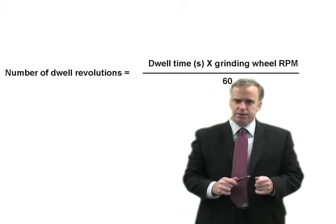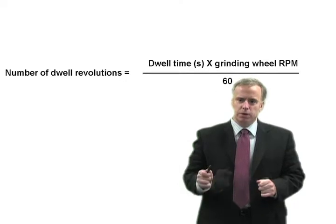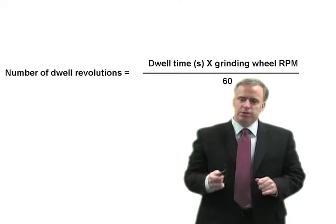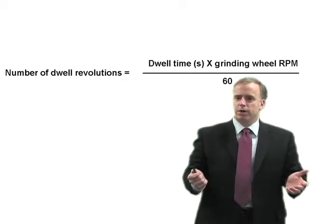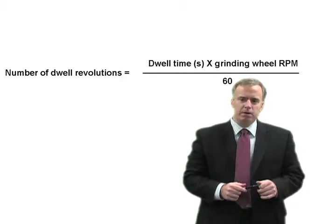What I'm interested in is how many revolutions do you dwell. If your wheel is going at 6,000 RPM, well that might be too long. If your wheel is going at 1,000 RPM, that might be just right.